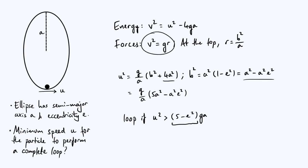So there we have our results, with physical interpretations for both orientations. I'm also planning to do another video on this same elliptical loop-de-loop problem but using constrained Lagrangian mechanics, so I hope you'll join me for that.